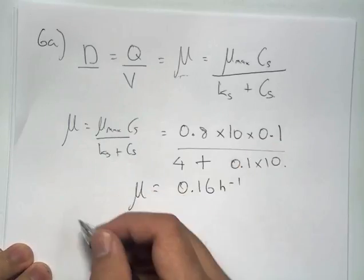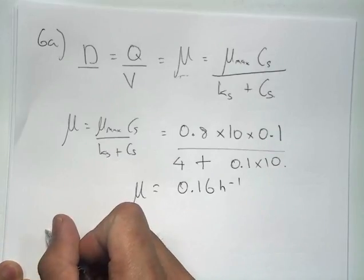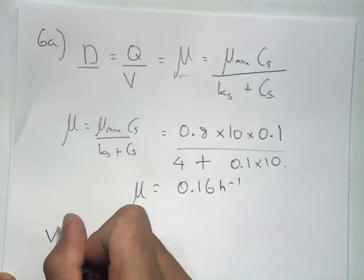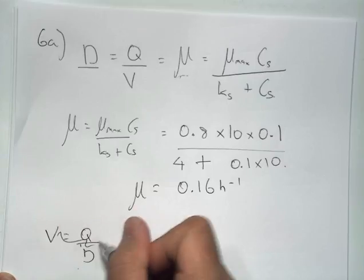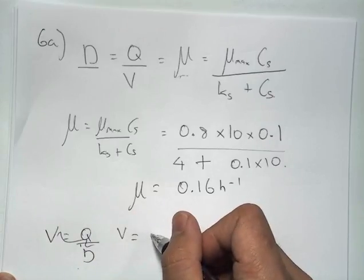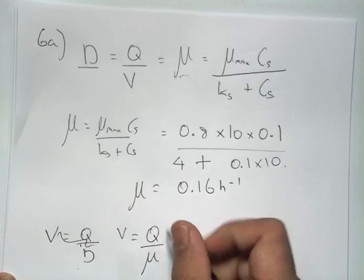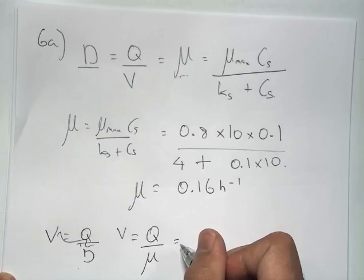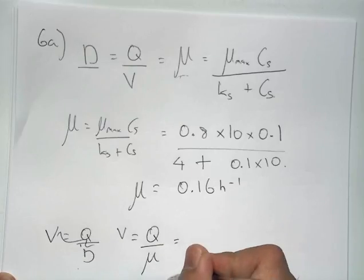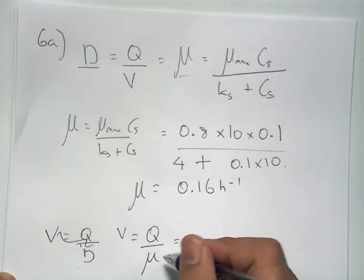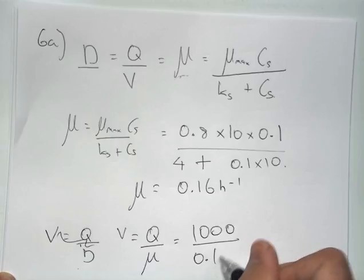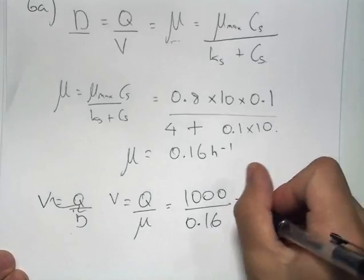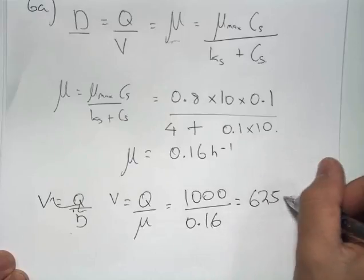We can then rearrange our equation into the form V equals Q over μ, the specific growth rate. In the question we're told that the feed rate is 1,000 decimeters cubed per hour, and we know that our specific growth rate μ is 0.16 hours to minus 1. We can therefore calculate our volume of fermenter from this, and we find that it's equal to 6,250 decimeters cubed.